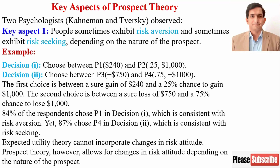Expected utility theory cannot incorporate changes in risk attitude. However, prospect theory allows for changes in risk attitude depending on the nature of the prospect. If the prospect is related to gain, people are risk-averse, and if the prospect is related to loss, people are risk-seekers.